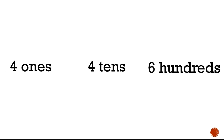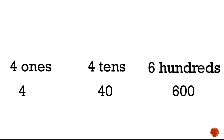I have four ones, four tens, and six hundreds. Which one is the biggest number? Right — six hundreds. And which one is the smallest? Right — four ones. Now let's write these as numbers. Push pause and then push play when you're done. Did your four ones look like this? And did your four tens look like this? And your six hundreds — did they look like this? Excellent job!